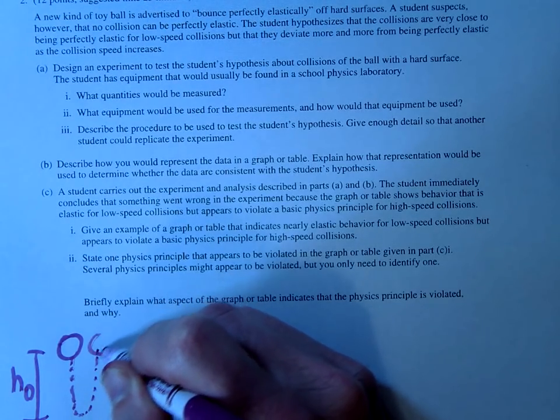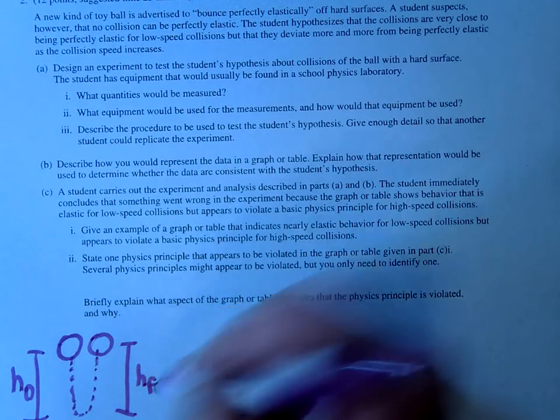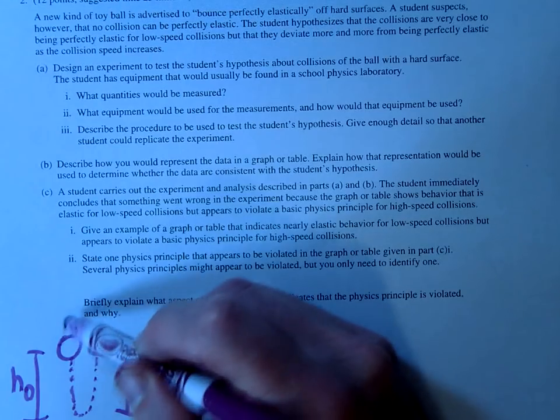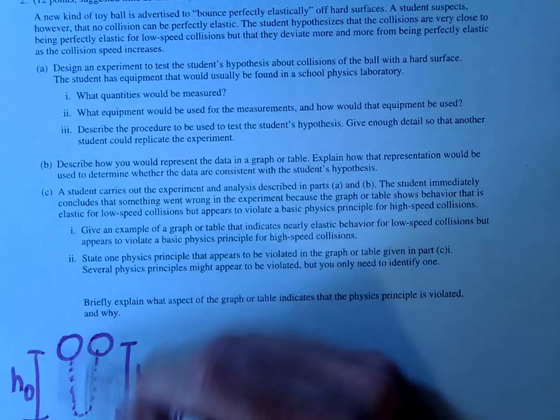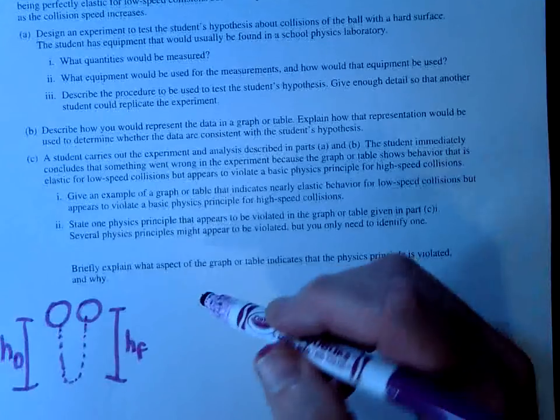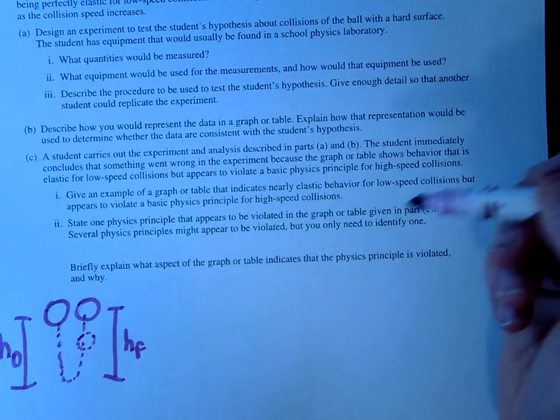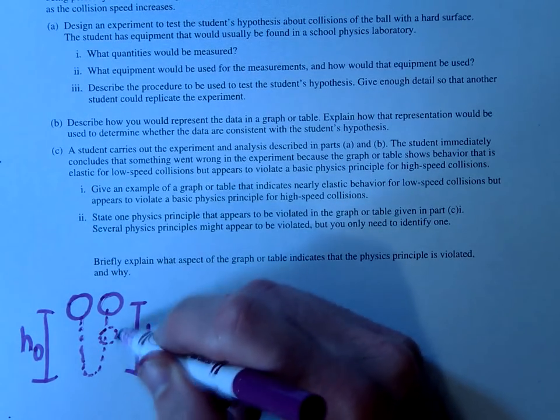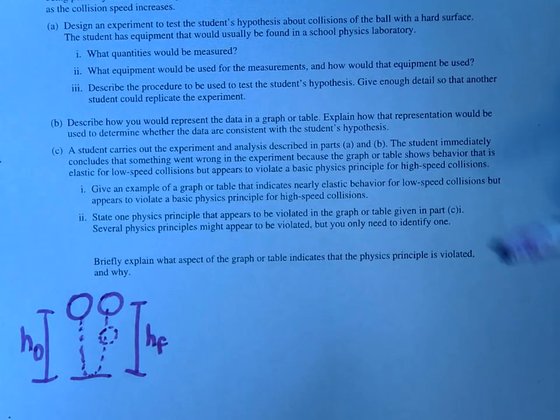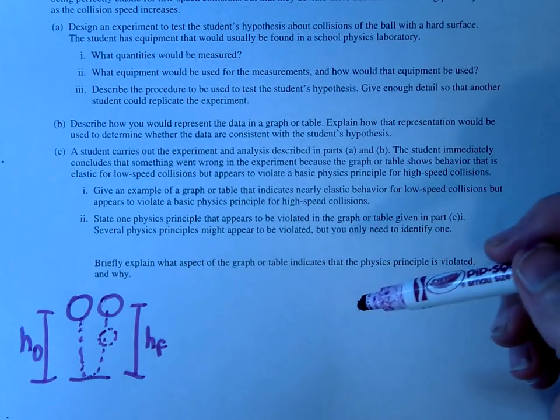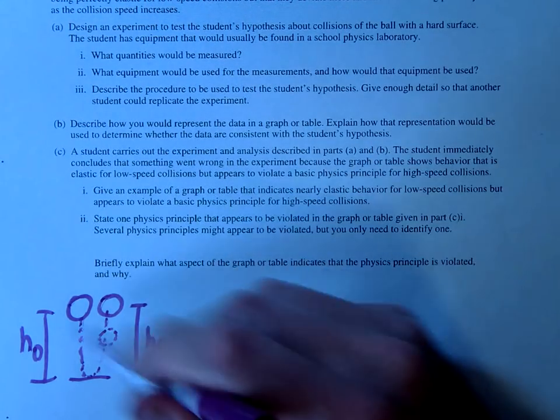And the basic idea is if it bounces to the exact same height h final, then you know that the initial potential is equal to the final potential. And therefore, there's no energy lost. It's perfectly elastic. Whereas if it bounces to a lower height, then you know that it ends with less potential energy. So we must have lost some energy in the collision. So that's kind of how I would do it, and you can explain a procedure that would get you to that point.